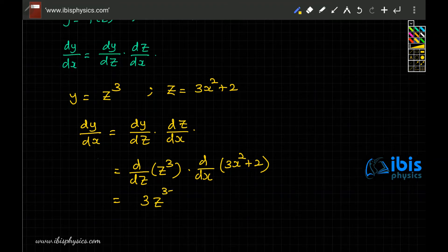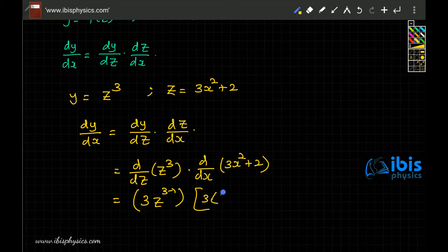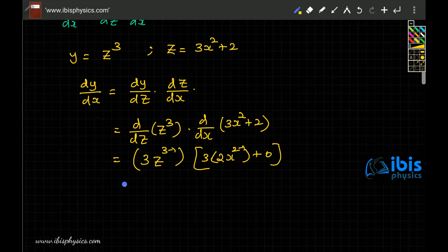And d/dx of 3x² + 2 is actually sum rule: three times x² differentiation 2x^(2-1) plus differentiation of 2 is 0.